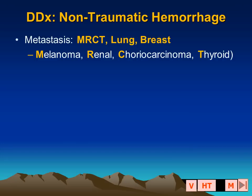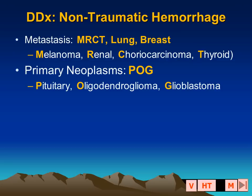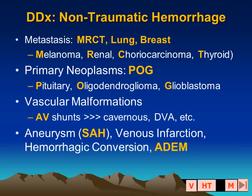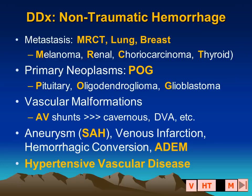When we have a non-traumatic hemorrhage, we always consider the diagnostic differential possibilities, including metastatic disease, primary neurologic neoplasms, vascular malformations, or subarachnoid hemorrhage. Remember that acute disseminated encephalomyelitis may also become hemorrhagic.